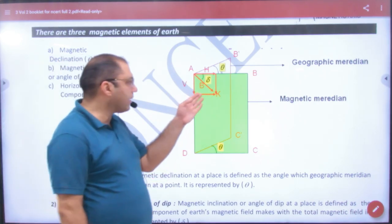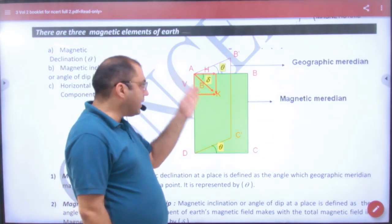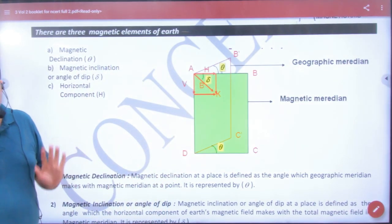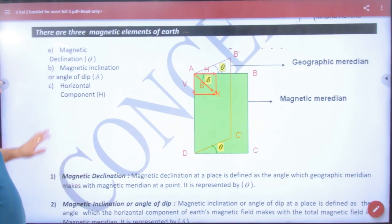This is magnetic declination and dip. The angle between the magnetic field and the horizontal component H is called the angle of dip. The Earth's three magnetic elements are: magnetic declination, inclination, and horizontal component.